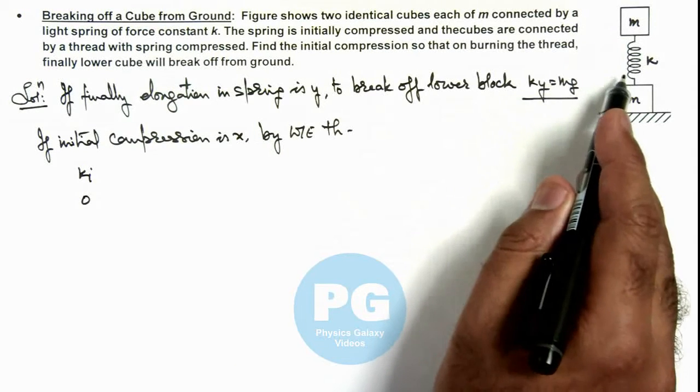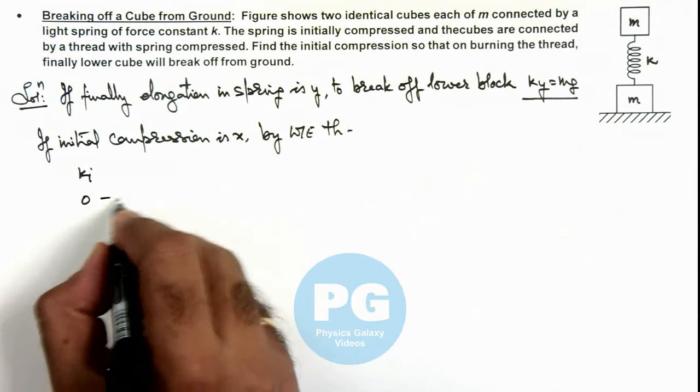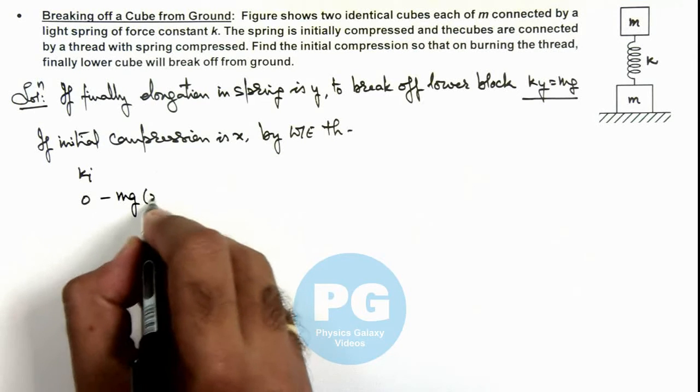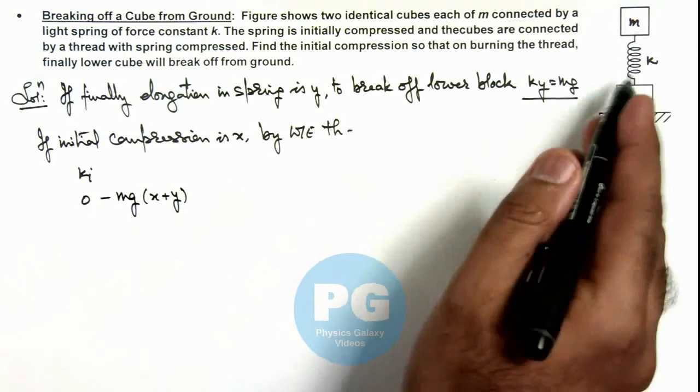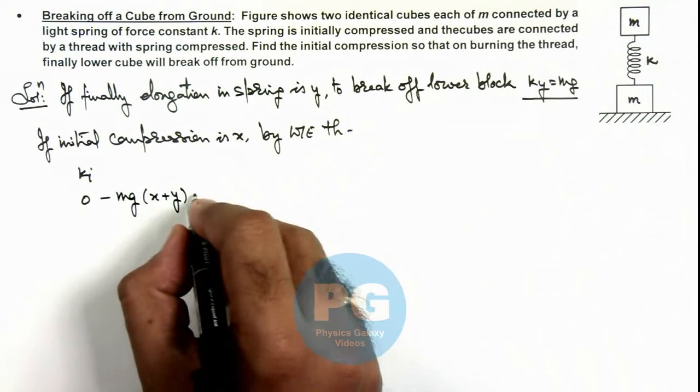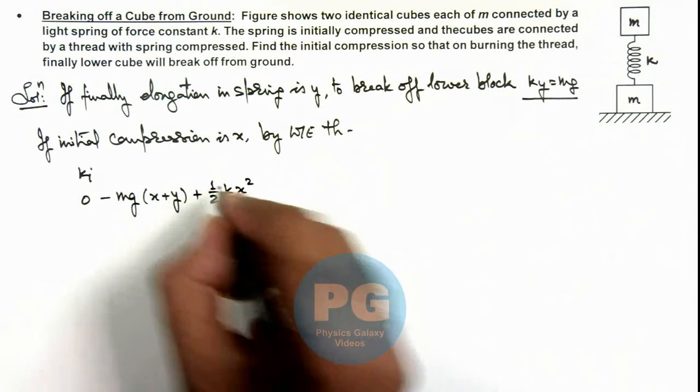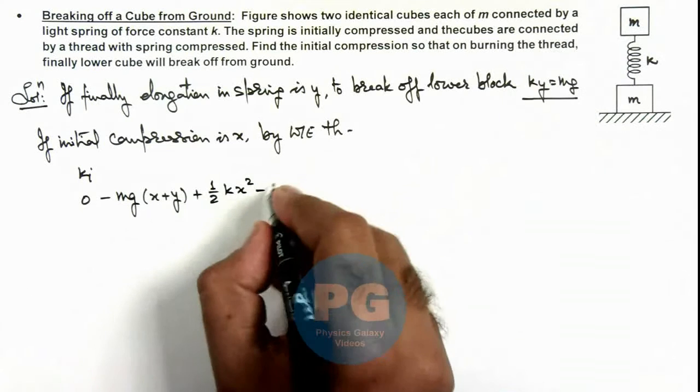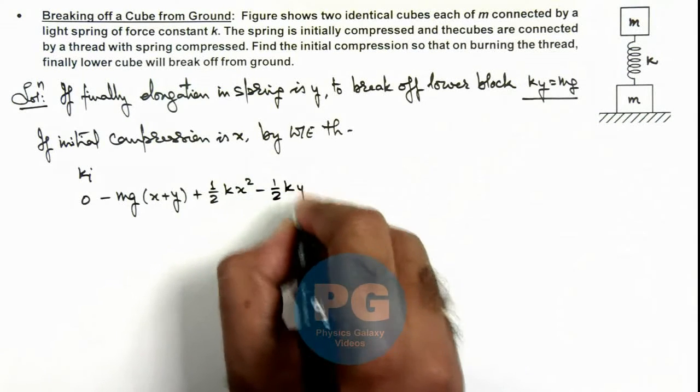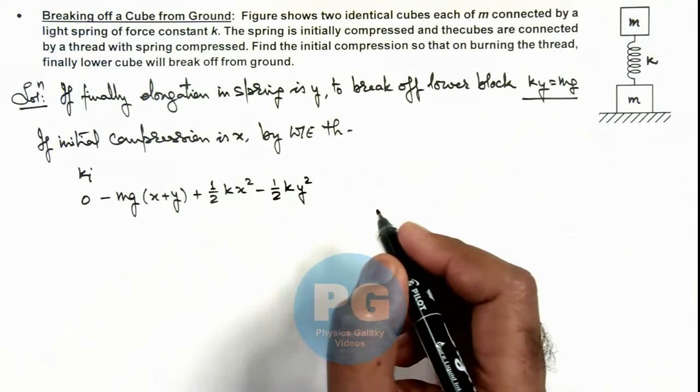In this situation, work done by gravity will be minus mg times (x plus y). The spring will release its potential energy, that is plus half kx², that is positive work done by spring on the block. And it'll absorb an energy minus half ky² as y is the final elongation in it.